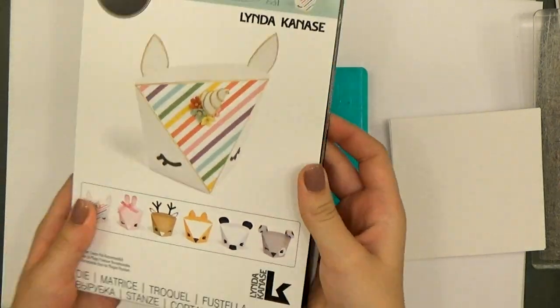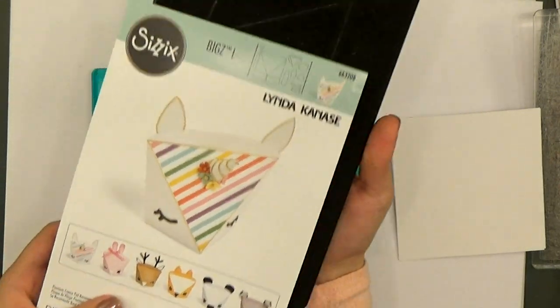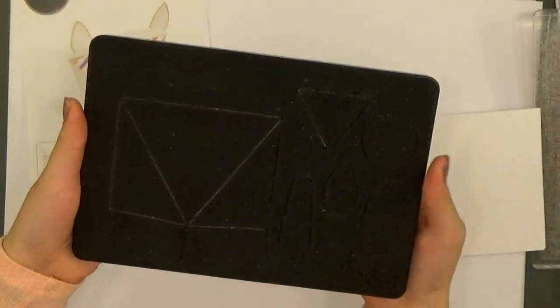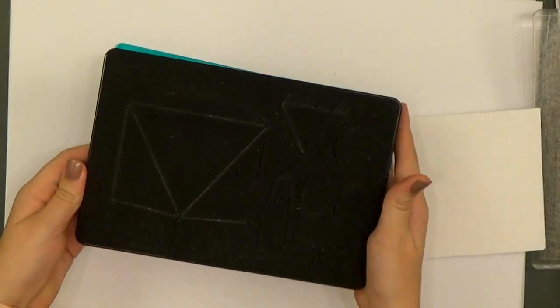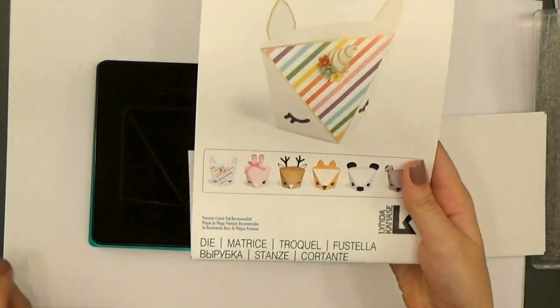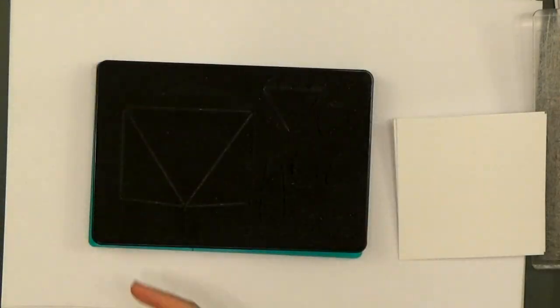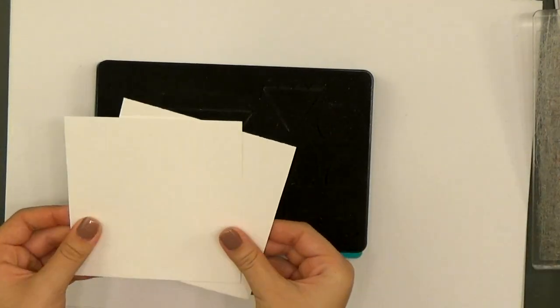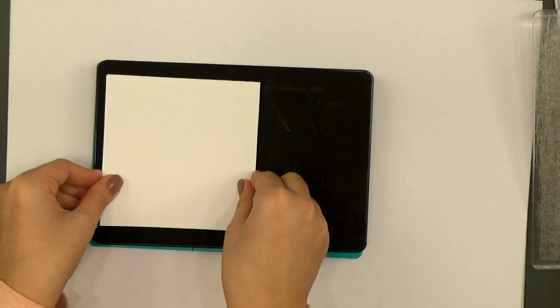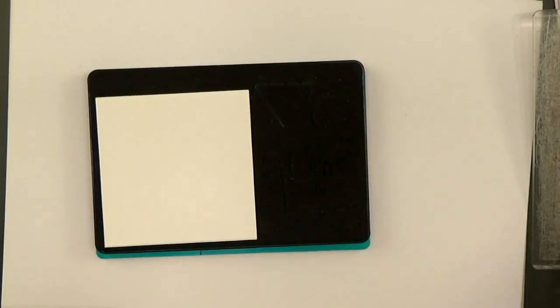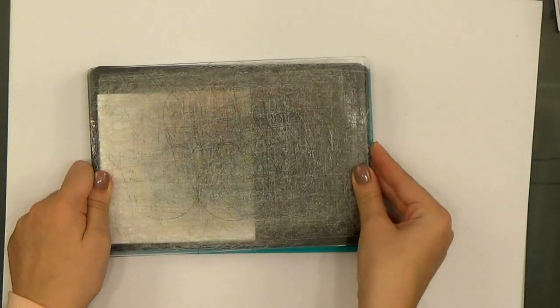This new die is a steel rule die, not the wafer dies that we see so often. You can cut through thicker layers of materials or more layers of cardstock at a time. It has all the parts you need to make multiple animals, but today Kelly's going to show you how to make a unicorn. These boxes are really easy to assemble, and with just a few extra steps you can turn them into Christmas crackers for your holiday table, which are a lot of fun. I usually buy some at the store, but this year we wanted to make our own.